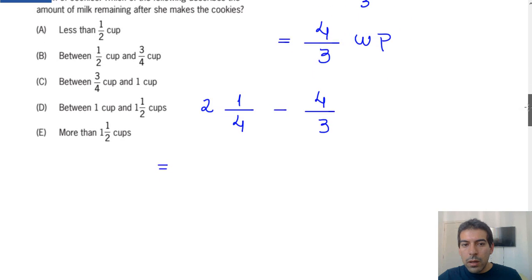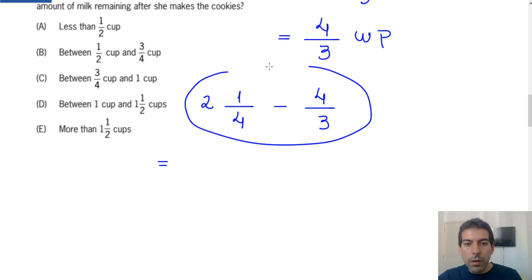To perform this subtraction, we put this mixed fraction in a non-mixed form. To do that, we keep the denominator and multiply the integer part by the denominator. So we have 2 times 4 is 8, and after that we sum the value with the numerator. 2 times 4 is 8, 8 plus 1 is 9.